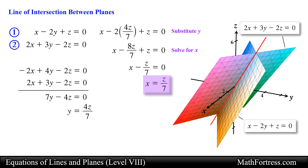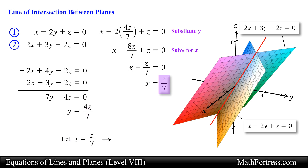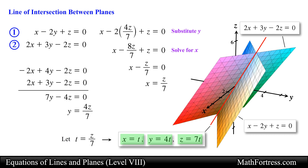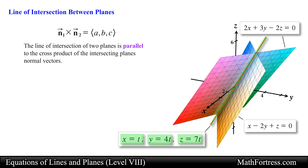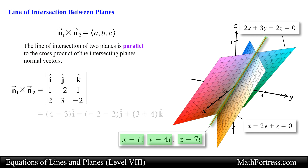Notice that we now have x in terms of z and y in terms of z. The last step is to let one of these expressions be equal to the parameter t. So let's assign the parameter t to the expression of x. This means that z is equal to 7t, and if z is equal to 7t then y is equal to 4t and x is equal to t. These parametric equations represent the line of intersection between these two planes.